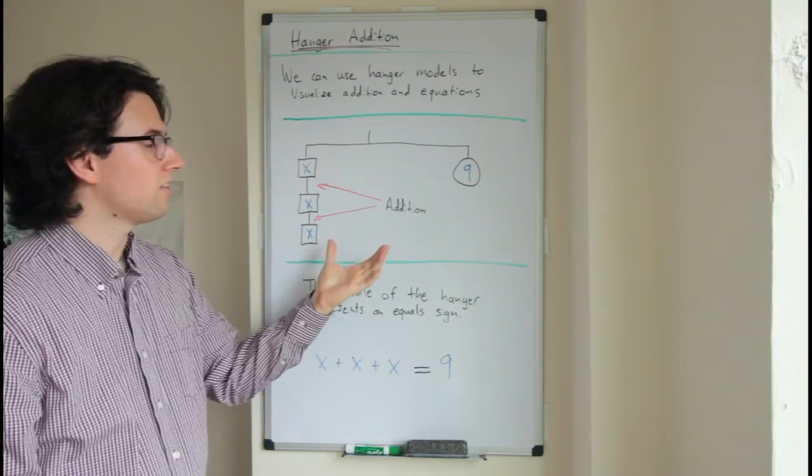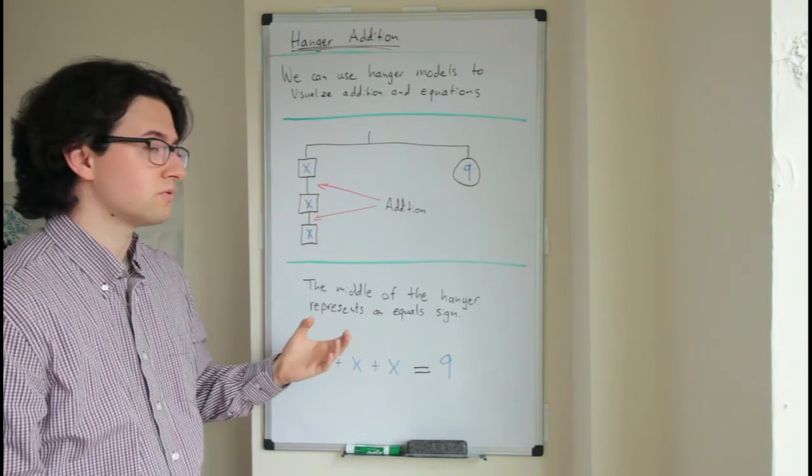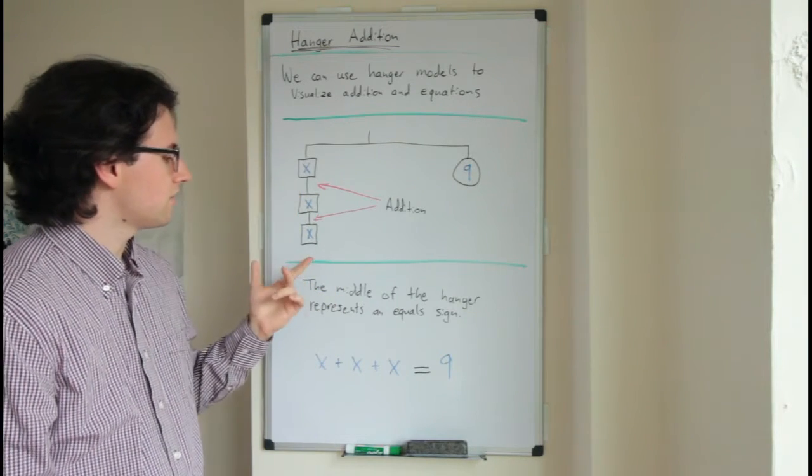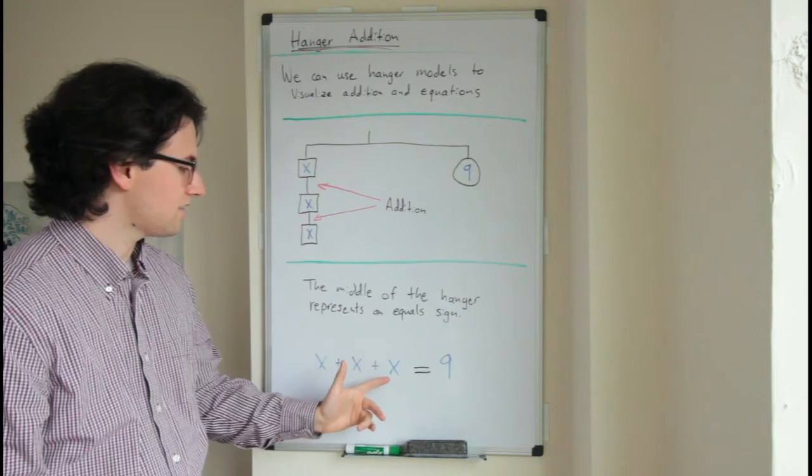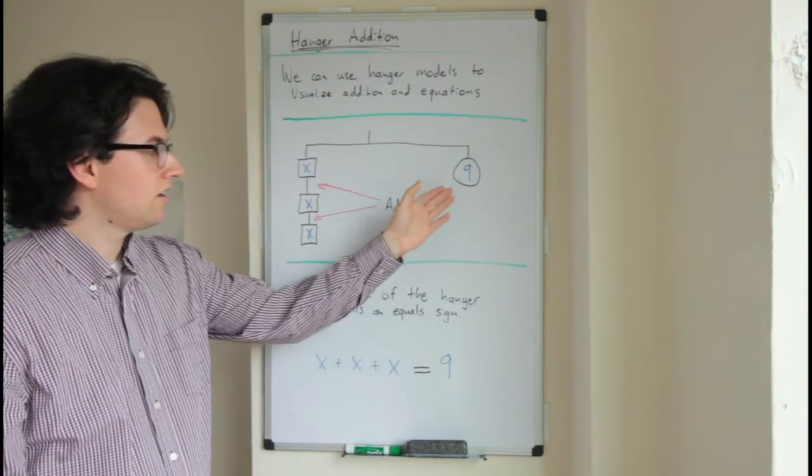Here is the hanger model. If I wanted to write this as an equation with an equal sign in the middle, I could write x plus x plus x equals nine.